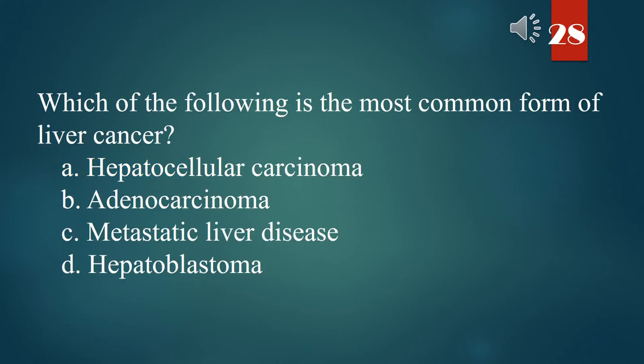Which of the following is the most common form of liver cancer? A. Hepatocellular carcinoma. B. Adenocarcinoma. C. Metastatic liver disease. D. Hepatoblastoma. The answer is C. Metastatic liver disease.